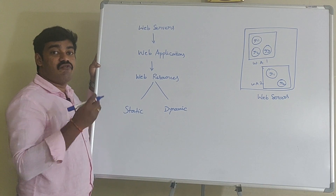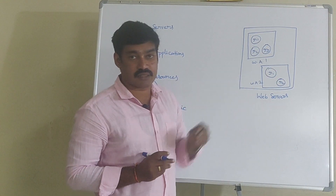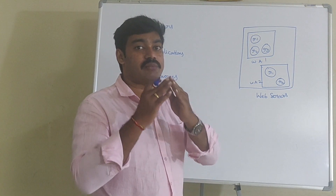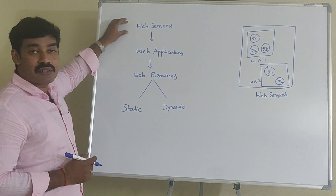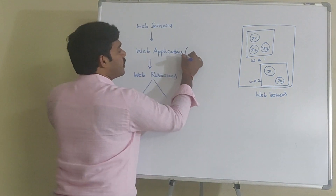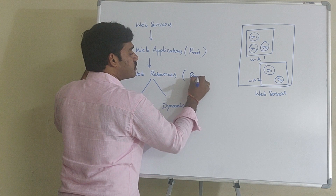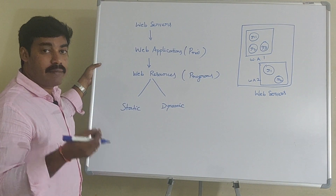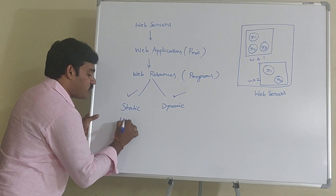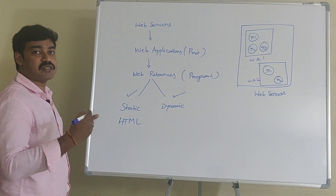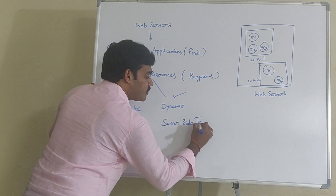Web servers contain a list of web applications. Web applications are nothing but projects. Each and every web application contains a list of web resources. Web resources are nothing but programs. There are two types of web resources: those which generate static content and those which generate dynamic content. We can develop static content web pages using HTML — HyperText Markup Language. We can generate dynamic content by using server-side technology programs.